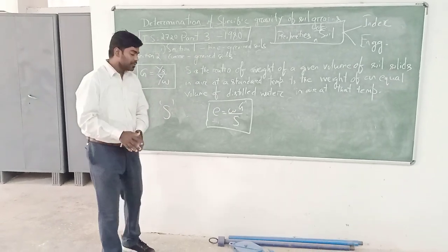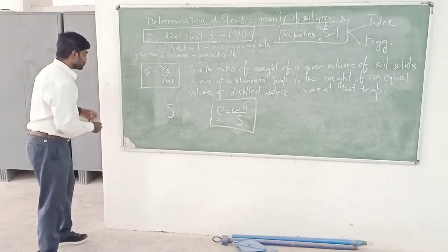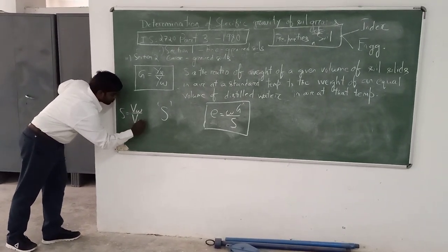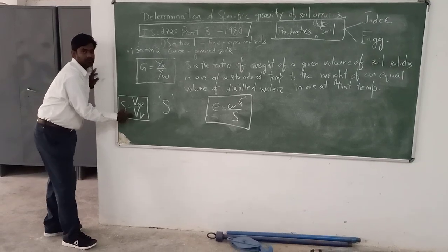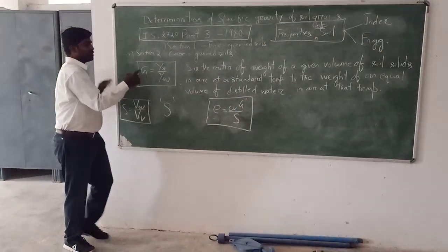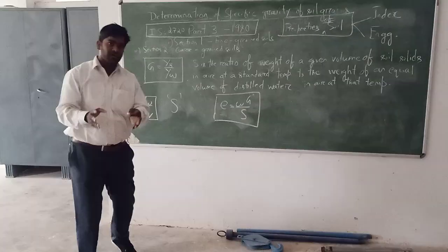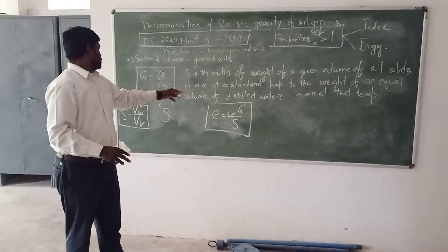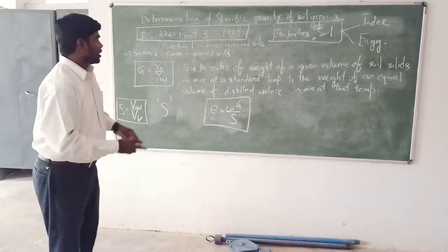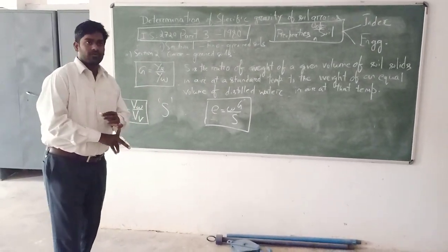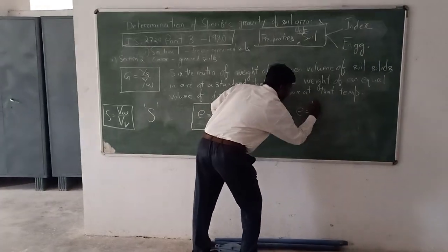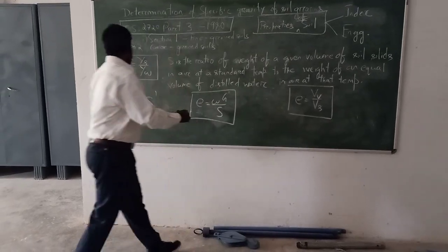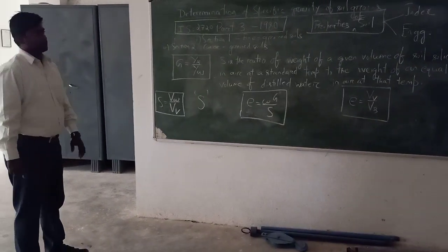The degree of saturation is the ratio of volume of water to volume of voids. Water content is the ratio of mass of water to the mass of soil solids. The void ratio E is the ratio of volume of voids to the volume of soil solids.